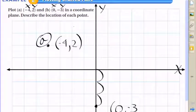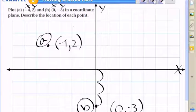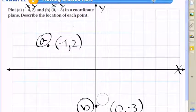I've completed my task and fulfilled the directions. I plotted the point (-4, 2) and also plotted the point (0, -3). This is how you plot ordered pairs.